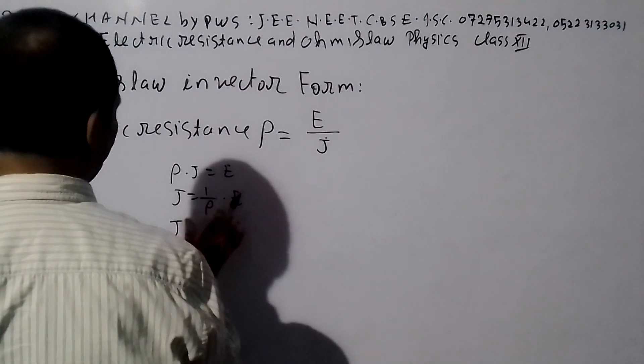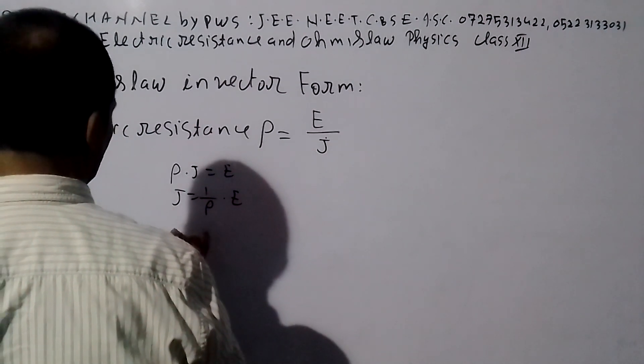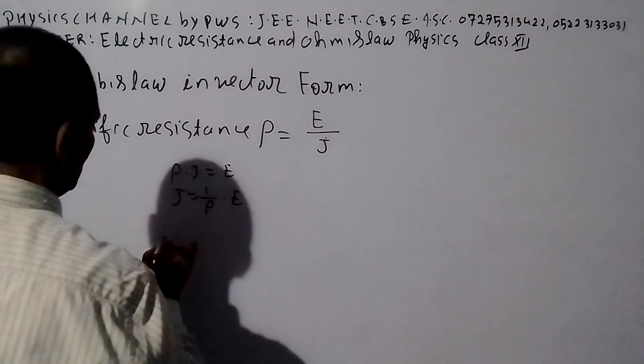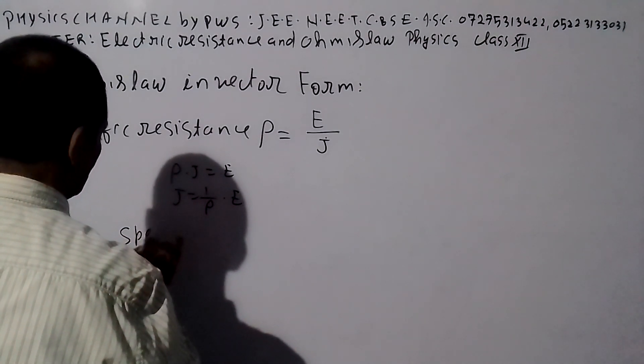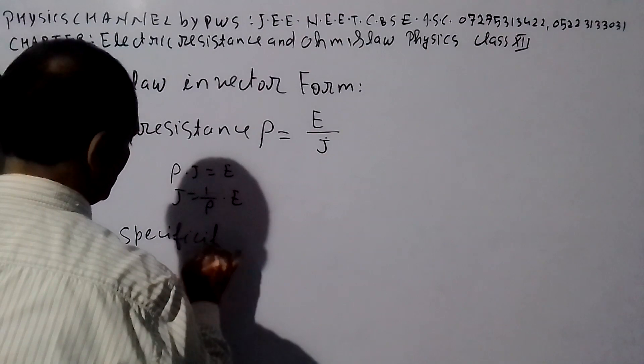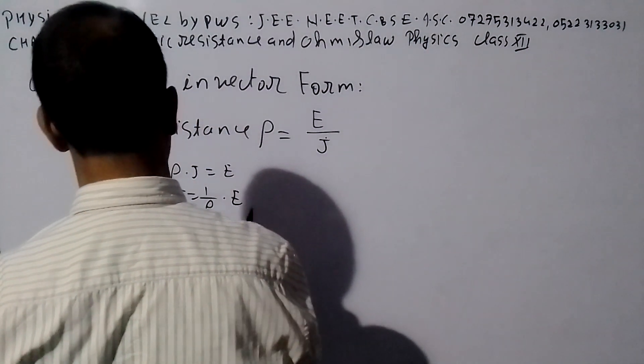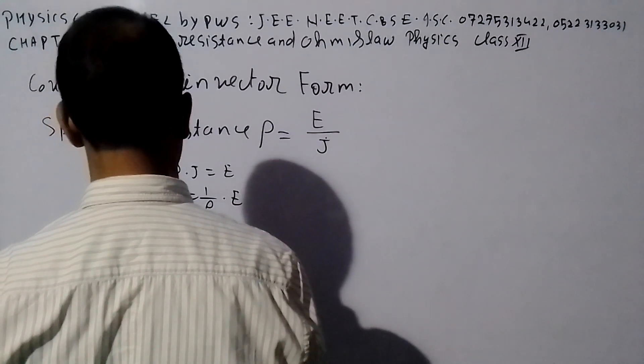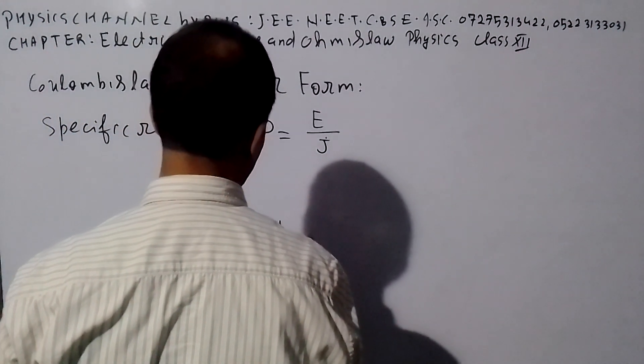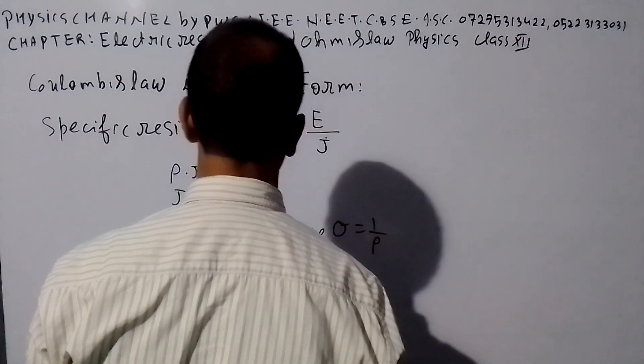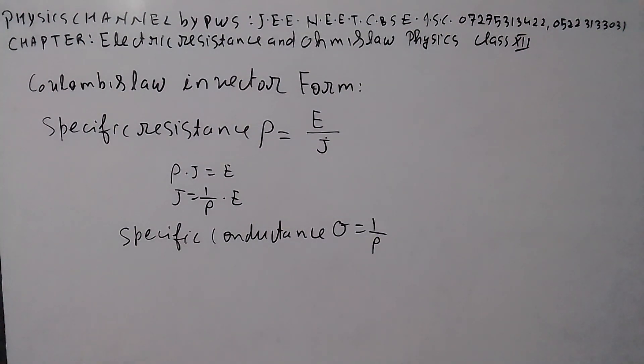Here we discuss sigma. Specific conductance. Specific conductance, sigma, is one upon rho, one upon specific resistance. Reciprocal of specific resistance is specific conductance.